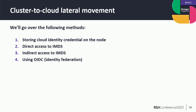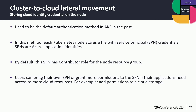There are four main authentication methods we will go over. The first is storing cloud credentials on the node. This used to be the default authentication method in Azure for AKS clusters. In this method, AKS stores a file with service principal credentials on each node in the cluster. Service principals are application identities in Azure, similar to service accounts in Kubernetes.